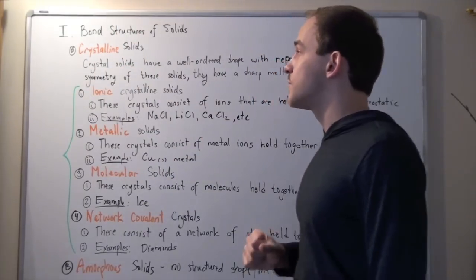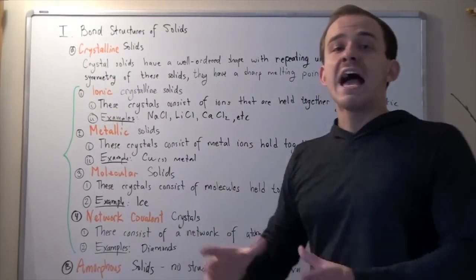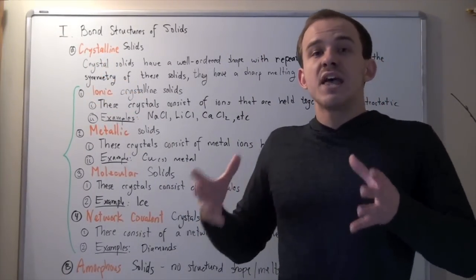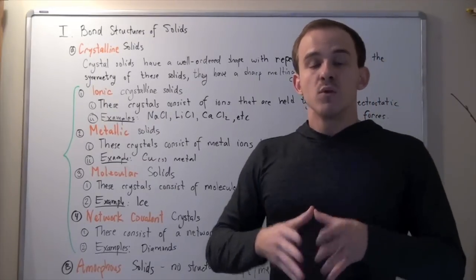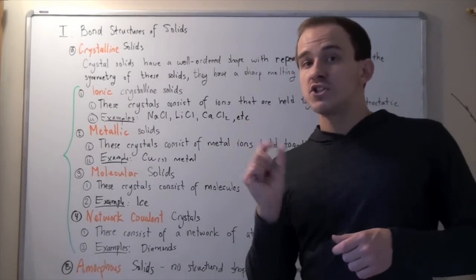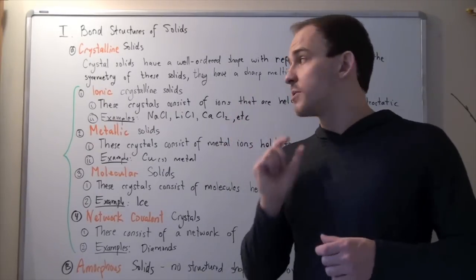Let's begin with crystalline solids. All crystalline solids, or simply crystals, have a very well-ordered shape or structure. Because of that, they have a very sharp melting point. What that means is the melting point's range is very small—it melts over a very small range of temperature.